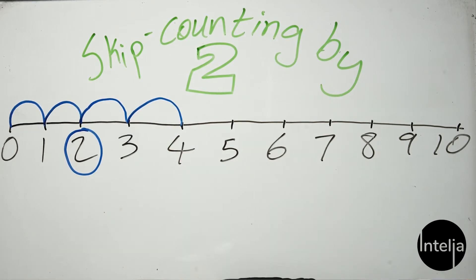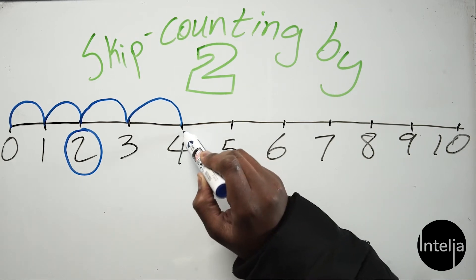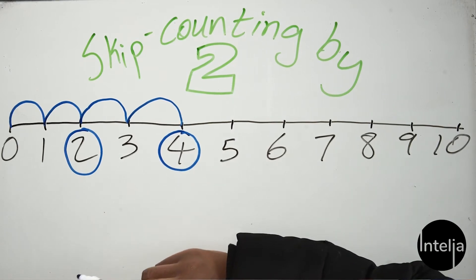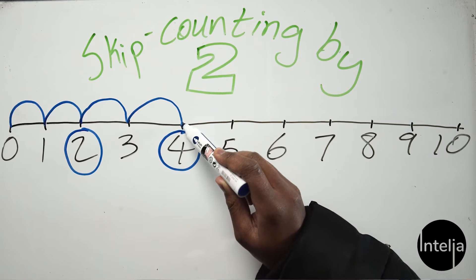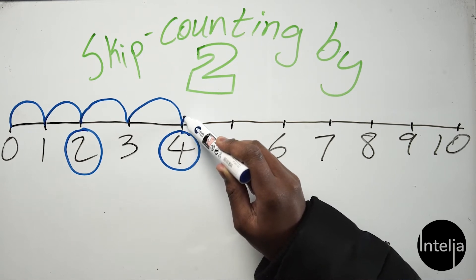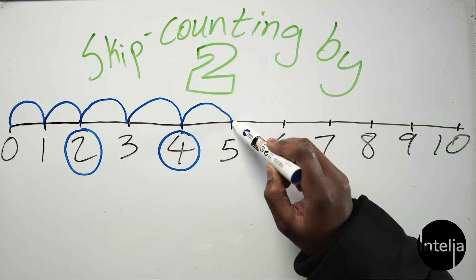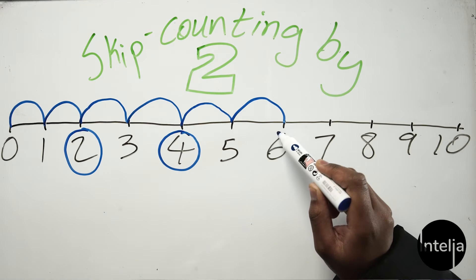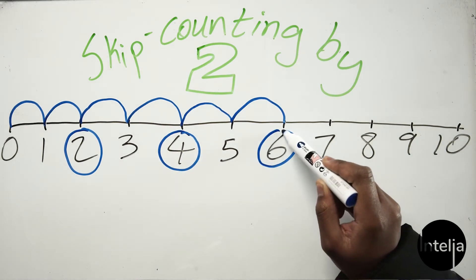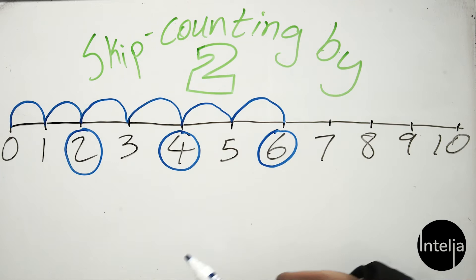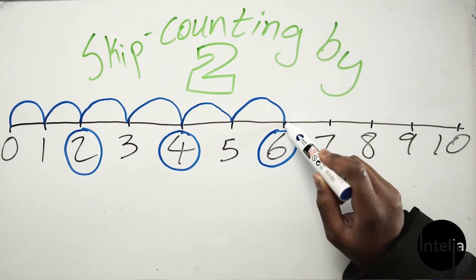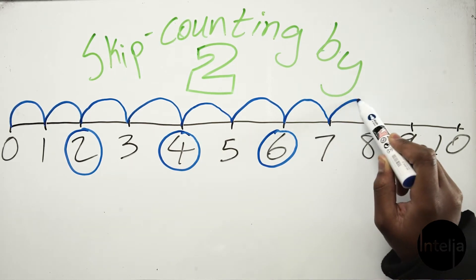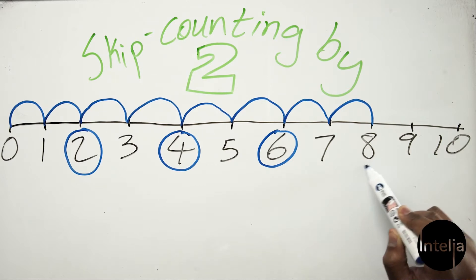Now let's do that again starting at two. Skip two times — one, two — and what number do we land on? Four! Well done. Now let's do it again, start at four — one and two — and what number do you land on? Six! Cool. Let's do it again starting at six, skip two times — one and two — and what number do you land on now?